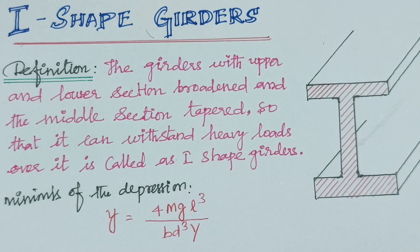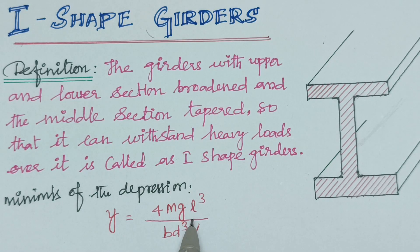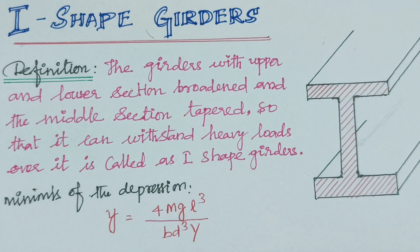Using this formula, we can minimize the depression. The depression can be minimized by decreasing the load, reducing the length of the girder, increasing the Young's modulus, or minimizing the width and thickness of the material.